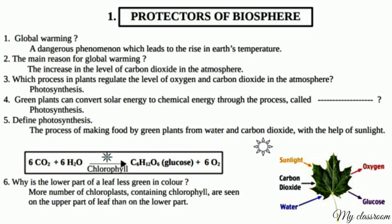Define photosynthesis. The process of making food by green plants from water and carbon dioxide with the help of sunlight. The equation: 6CO2 + 6H2O, in the presence of sunlight and chlorophyll, gives C6H12O6 (glucose) + 6O2.